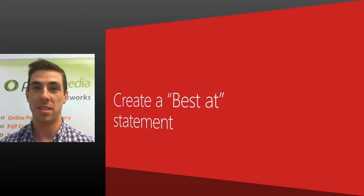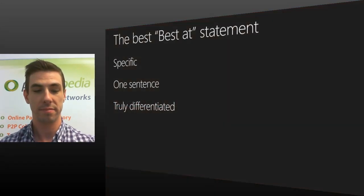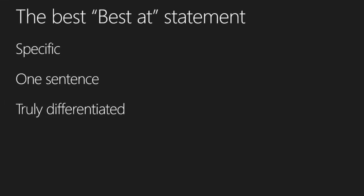So let's start off by creating a best at statement. Here are a couple of guidelines that will help you through. Within a best at statement, you really want to be specific. You want it to have one sentence and you want it to be truly differentiated. If you're writing multiple sentences or creating this really complex best at statement, then you're not really achieving the functional idea of a best at statement. For example: this app is the best app in its category at blank. All you have to do is fill in the blank with a well-thought-out statement that is one sentence, specific, and truly differentiated.